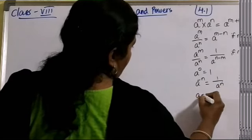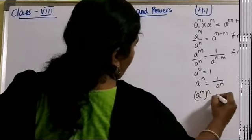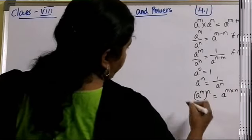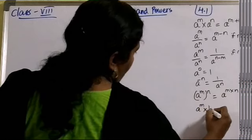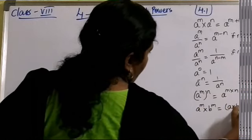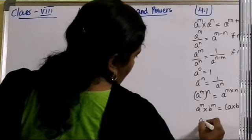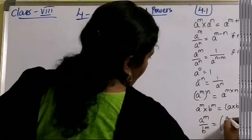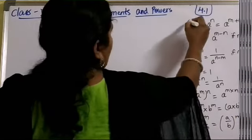Law 5: (a^m)^n = a^(m×n). Law 6: a^m × b^m = (a×b)^m. Law 7: a^m ÷ b^m = (a/b)^m. So here we have eight laws in total. Based on these laws, we are going to solve Exercise 4.1.